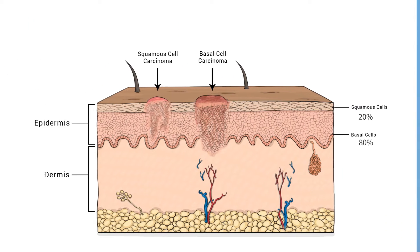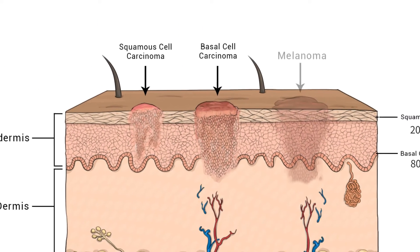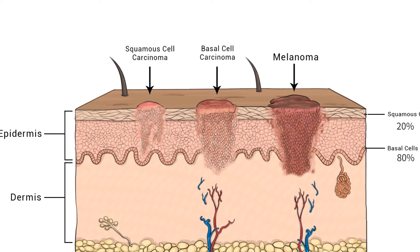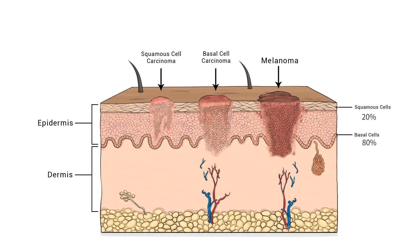Finally, melanomas. Melanomas are a kind of cancer that starts in melanocytes, the pigment-producing cells of the skin which give the skin its color, and, like basal cells, live near the border of the epidermis and dermis. Melanoma is very rare, accounting for only about 1% of skin cancers, but is also the most serious form of skin cancer because of its ability to grow deep into the skin, invade blood vessels, and eventually spread to other parts of the body. It can develop anywhere on the body, even in areas that aren't usually exposed to the sun, like the genitals and the soles of the feet.